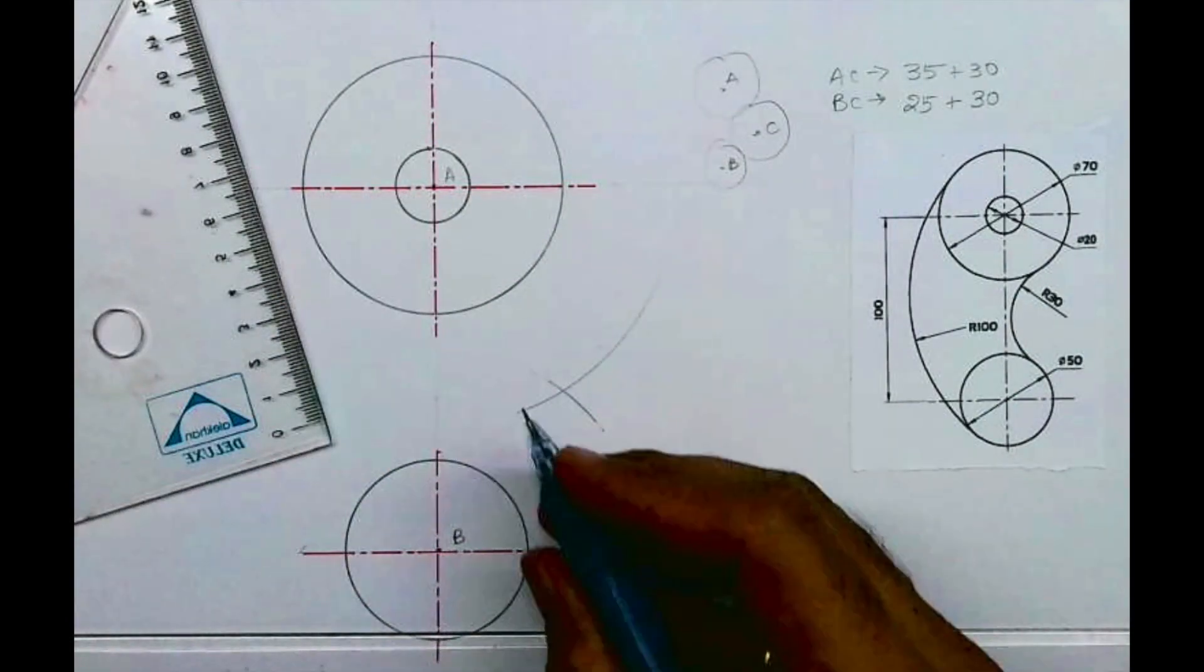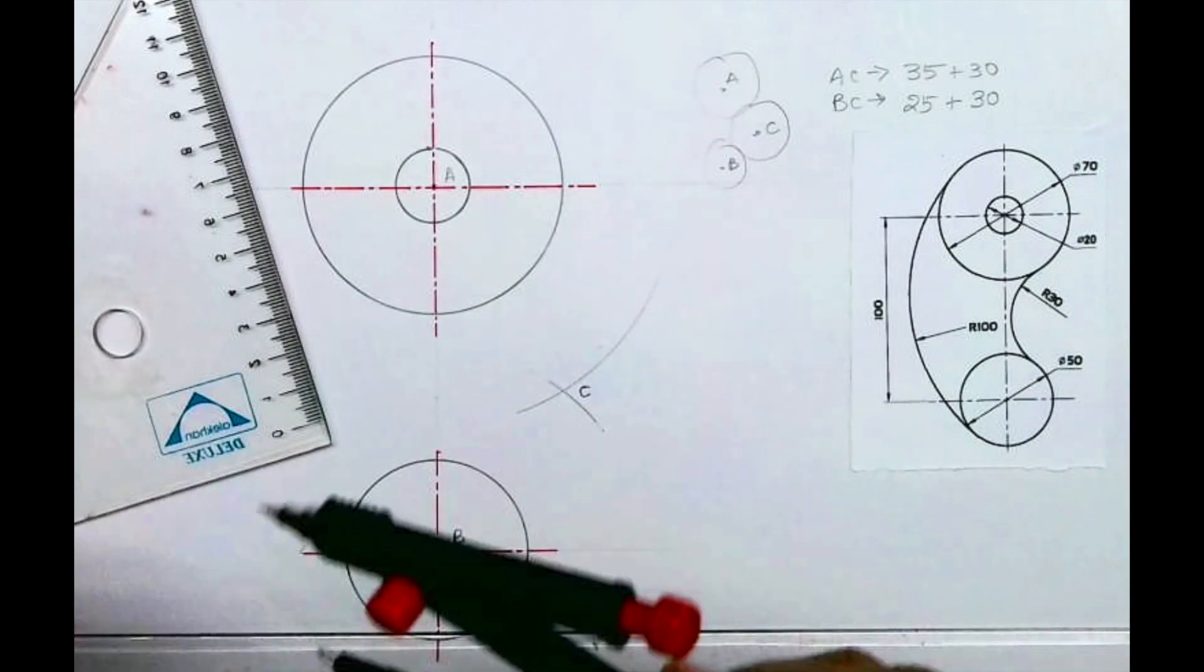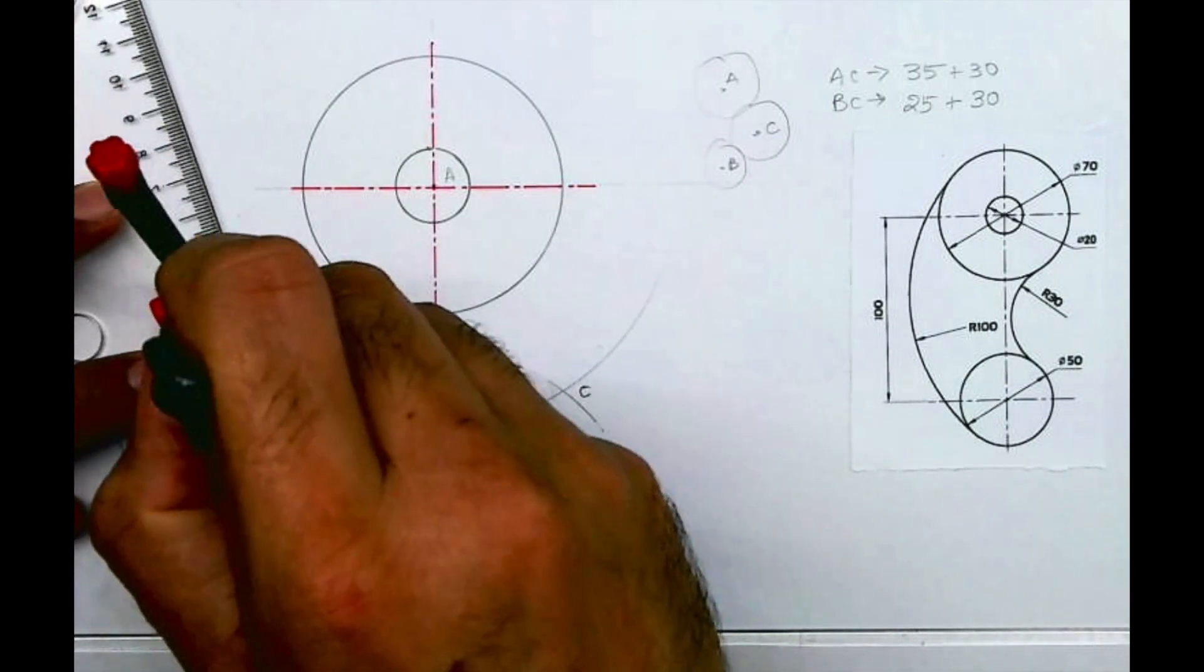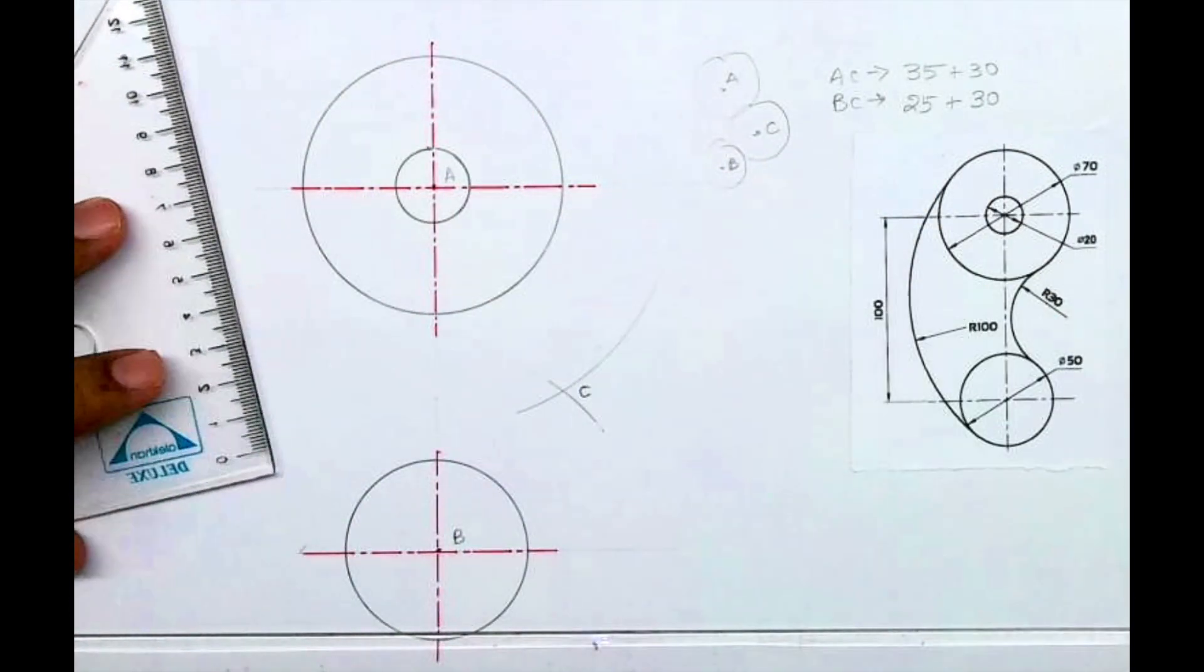Wherever it will cut, from that point I can draw a line passing through A. I can draw line CA and CB, and I can draw the arc, or I can draw radius 30 directly, whatever you feel comfortable with.